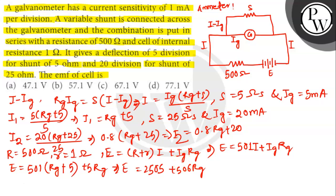Again substituting I2 in the EMF equation we get that E equals 501 into 0.8 RG plus 20 plus 5 RG.